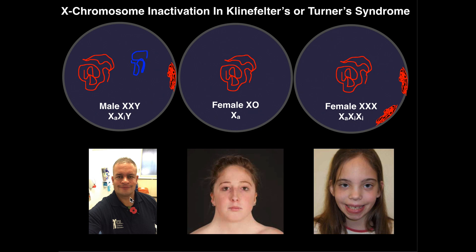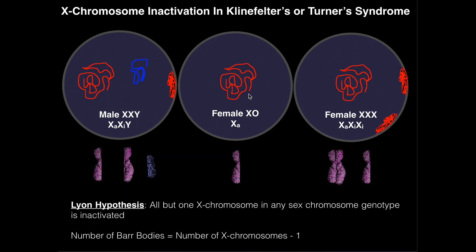These three conditions have some slight differences from normal appearance, and there can be cases of learning deficits, but overall nothing that prevents these people from living normal lives. They have reduced fertility, but can still be fertile. In Turner syndrome, we only have one X chromosome, so we would not expect to see any Barr bodies — we can't inactivate the only X chromosome the organism has, so there's just an active X chromosome (X sub A).